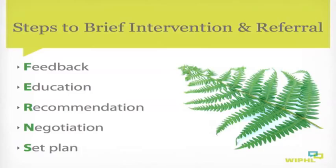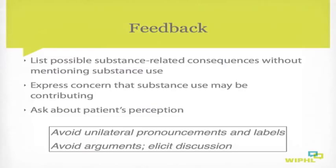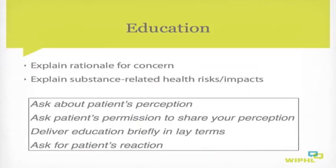For delivering initial feedback, first we can list possible substance-related consequences without mentioning substance abuse per se — simply delivering a list of negative consequences or stresses that emanate from their substance use. Next, we express concern that substance use may be contributing to these stresses. The third step is to ask the patient what they think. When delivering this feedback, it's best to avoid unilateral diagnostic pronouncements and pejorative labels — our goal is to avoid arguments and elicit discussion.